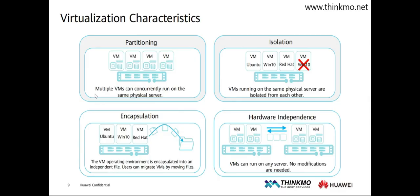As long as it is an image version with a CPU architecture supported by our physical machine, it can be installed normally. For example, on a physical server, some virtual machines are running operating systems used for office work, such as Windows, where employees can perform document processing, spreadsheet creation, and other operations. Some systems are specifically dedicated to running server-side operating systems, like Linux, to support back-end operations of websites or tasks such as database management.